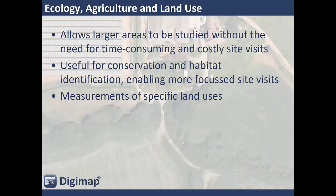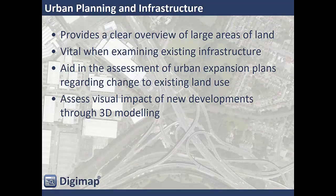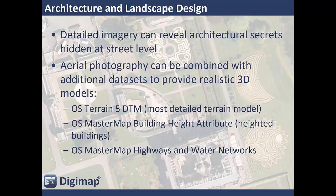In the ecological environment, aerial photography is really good for land use studies. The photography lets you study larger areas and identify specific site visit locations before going out in the field, giving you a broad understanding of an area. It's also used a lot in urban planning and infrastructure — it's vital to understand infrastructure and land use at a proposed location. There's quite a lot of 3D modelling these days, and aerial photography is a really good way of visualising the impact of proposed developments on the environment, which feeds nicely into architecture and landscape design.